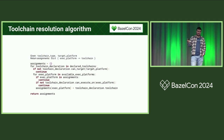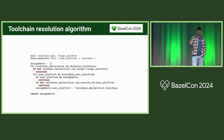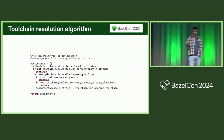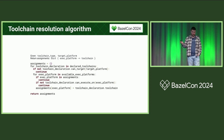For each execution platform, you check: does it already have a toolchain assigned? If it does, we don't need one. If it doesn't, then we say: for this execution platform, use this toolchain. At the end, we return the map of assignments.